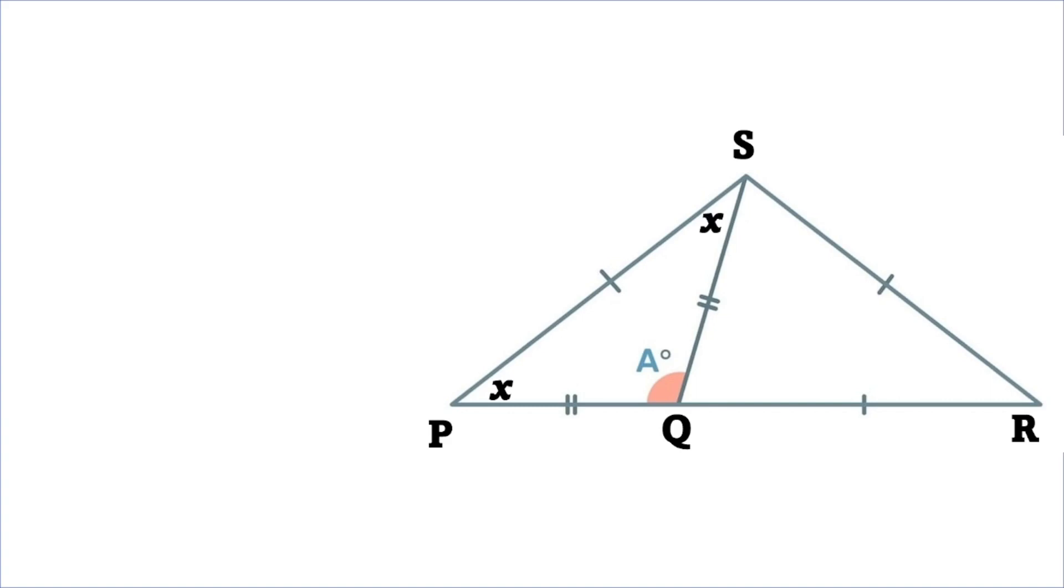I see that the angle QSR will be labeled as Y, and because the side SR is congruent to the side QR, then the angle SQR will also be Y. And I'll label the final angle there at point R as Z.